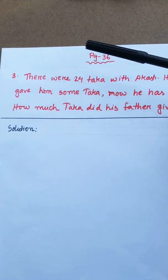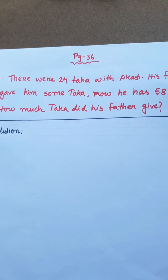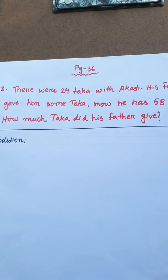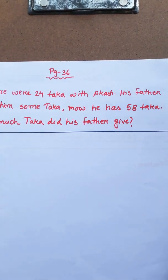The question is: There were 24 taka with Akash. His father gave him some taka. Now he has 58 taka. How much taka did his father give?